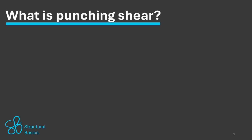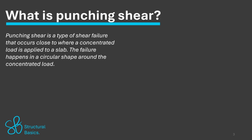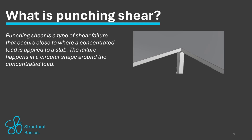Let's start by clarifying what punching shear is and where it happens. Punching shear is a type of shear failure that occurs close to where a concentrated load is applied to a slab. The failure happens in a circular shape around the concentrated load.